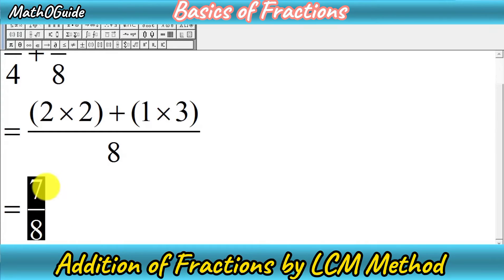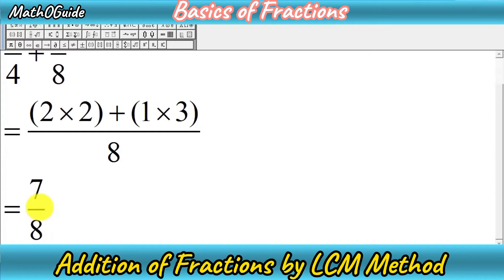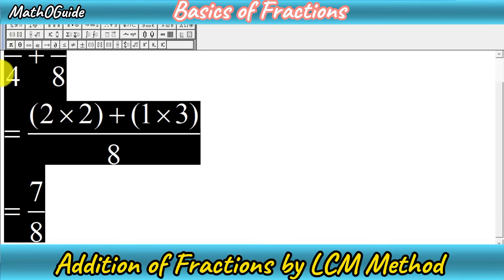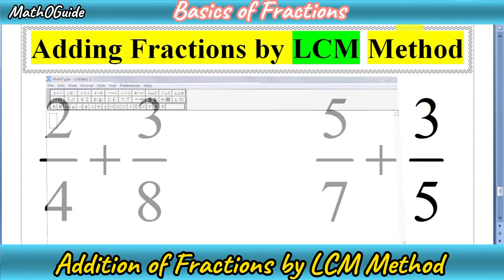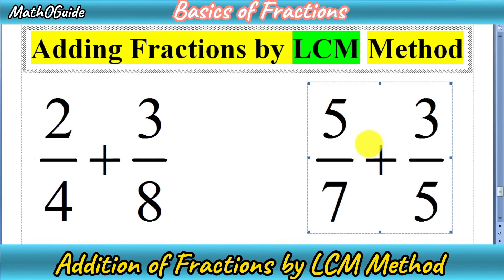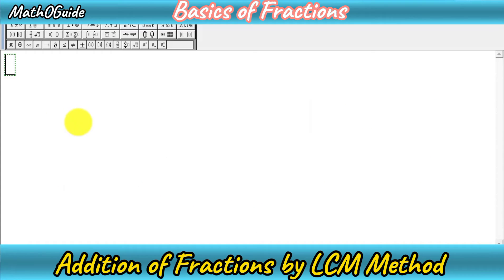After adding, we check if there are any common factors between the numerator and denominator. There is no common factor between 7 and 8, so 7 over 8 is our simplified answer.